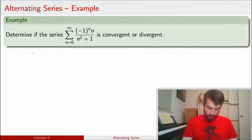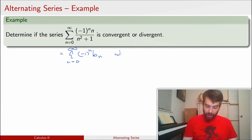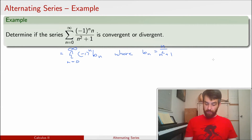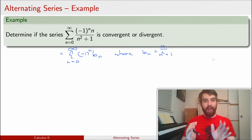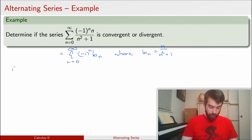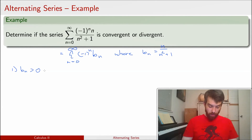Here's an example: the sum from n=0 to infinity of (-1)^n times b_n, where b_n = n / (n² + 1). To apply the alternating series test, we verify the required properties. Clearly it's (-1)^n times something, but there are conditions on that something — conditions on b_n. First, I need b_n > 0. Well, clearly this is the case: n is positive, n² + 1 is positive, so b_n > 0.